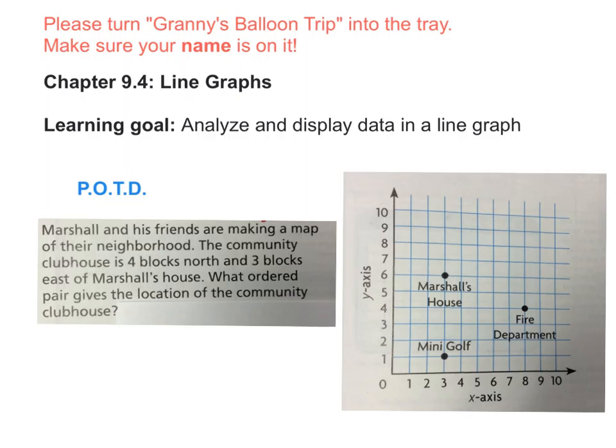So today we are moving right along in chapter 9. We're now at 9.4, which is all about line graphs. Remember in the beginning, the very first lesson we learned about line plots, and then we learned about coordinate grids and ordered pairs. Then we learned how to turn those ordered pairs and coordinate grids into graphs by plotting different points that show the relationship between the x-axis or independent variable and the y-axis or dependent variable. Today we're going to take it one step further and turn those graphs into line graphs. Your learning goal for today is to be able to analyze and display data in a line graph.